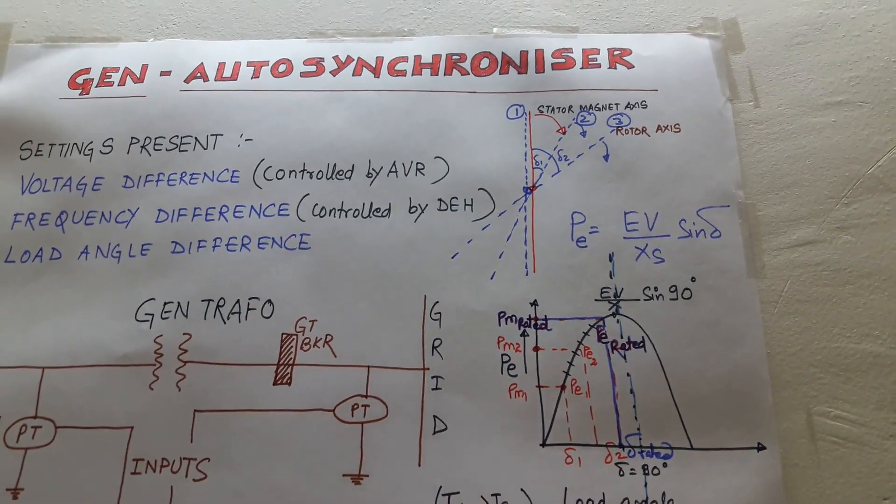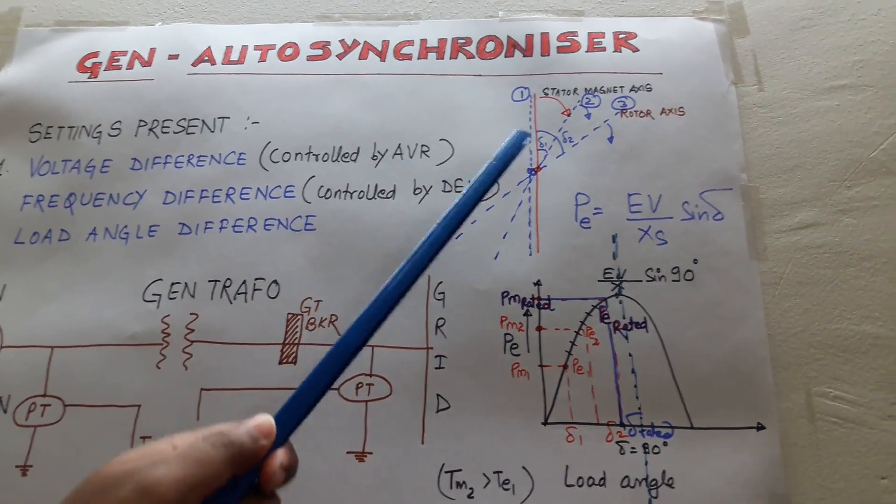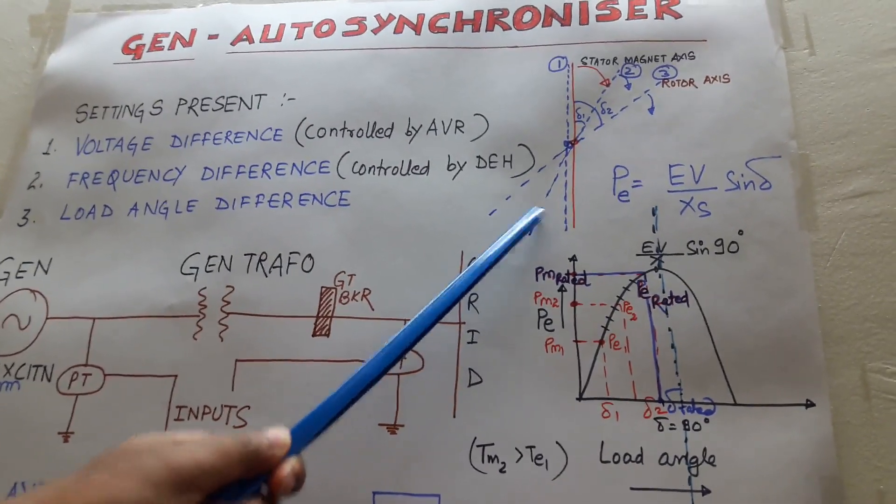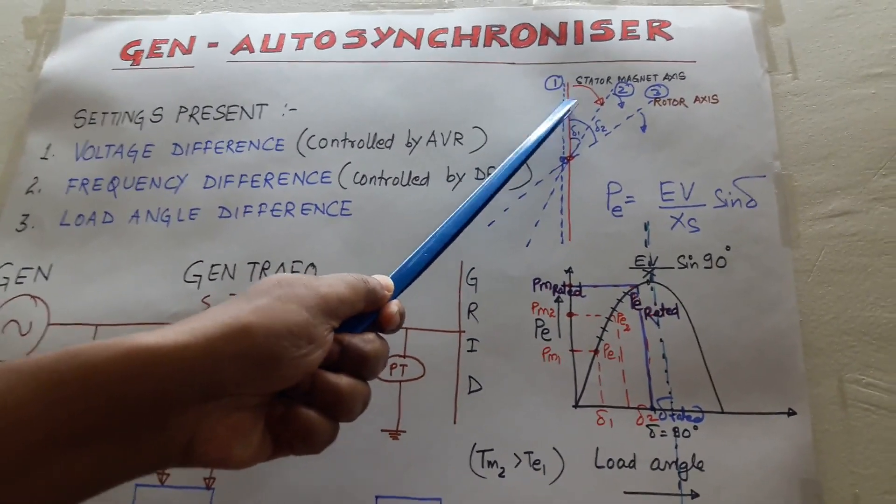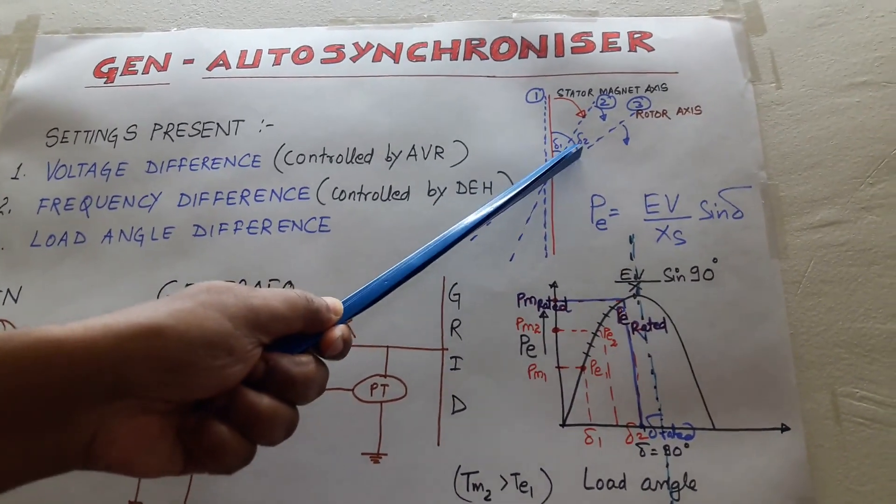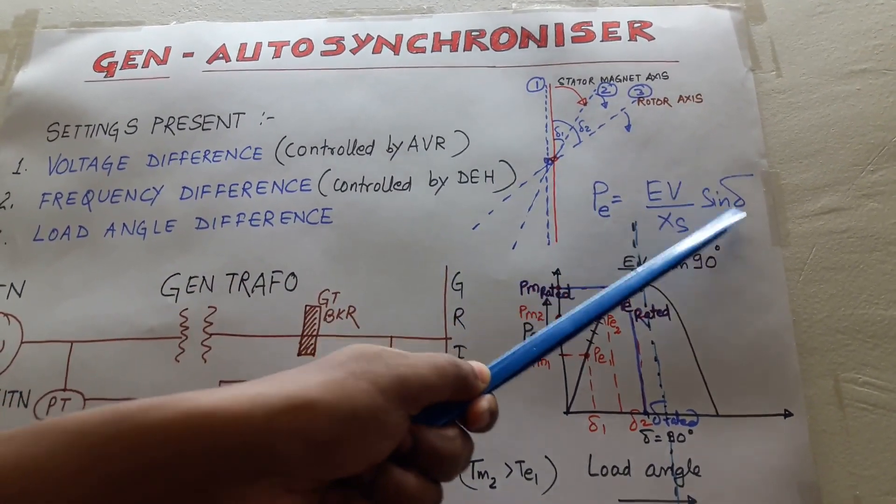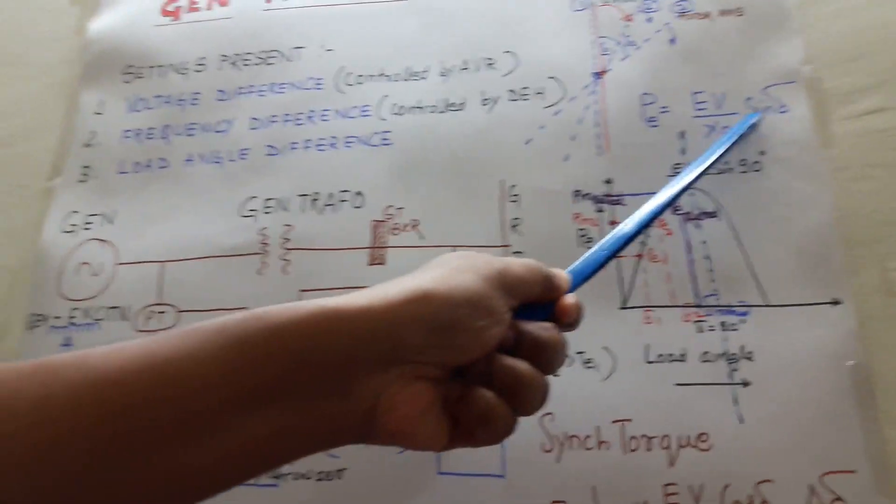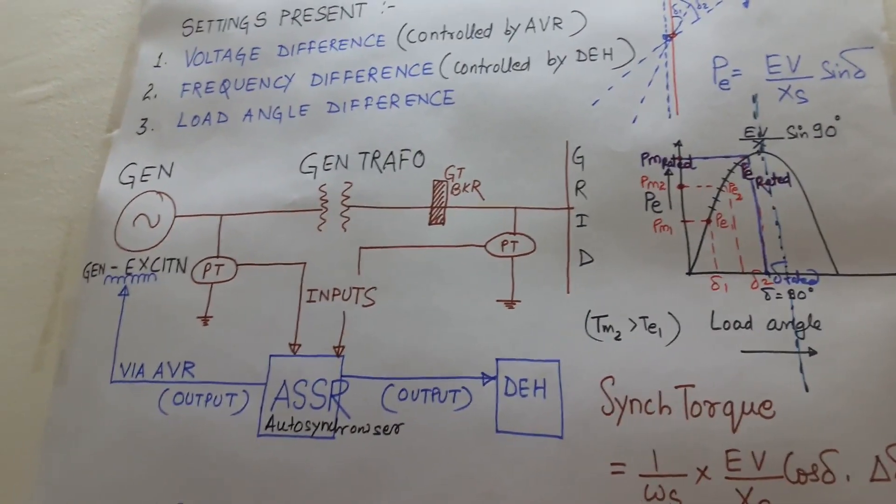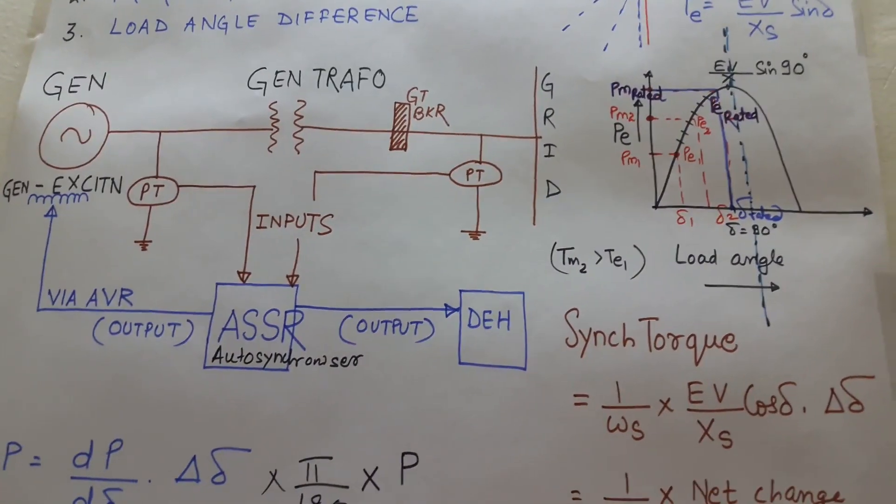So whenever we want to change the load, we have to increase the speed of the rotor so that this angular displacement will increase, so that the load angle will be increased from delta one to delta two. And if my load angle increases, the sine delta will increase and the net electrical power will increase. This is the way how the load is increased in the generator.